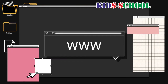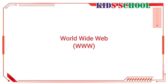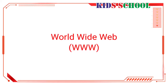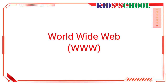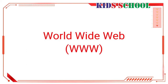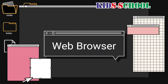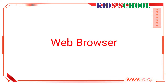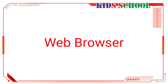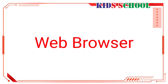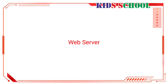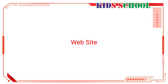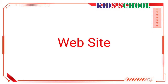World Wide Web, or WWW, is a collection of all the websites on the internet. All these websites are linked to one another to form a global web of information. A web browser is a program for getting connected to the WWW and viewing any information on it — Microsoft Internet Explorer is a web browser. A web server is a program or computer that stores all websites. A website is a collection of web pages linked to one another.